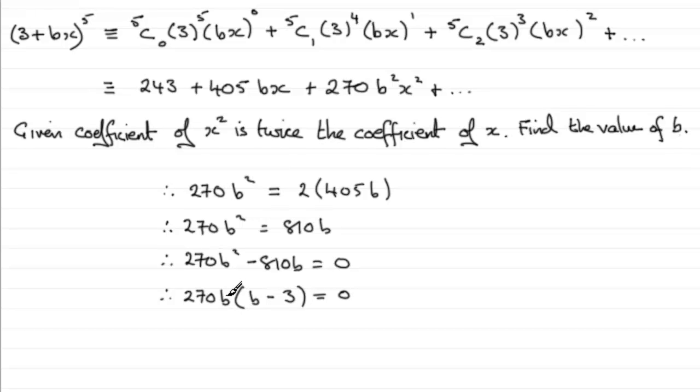Now we're told at the beginning, in the beginning part of the question, that b is a non-zero constant, because this would lead to b equaling 0. But we know that can't be the case. So therefore, it must be this factor here, b minus 3, which equals 0.